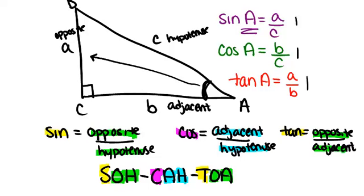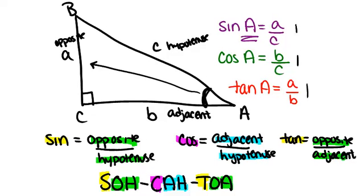So for any right triangle, you can always figure out these three ratios from any of the non-right angles. So we could have done the three ratios, sine, cosine, and tangent, for angle B, as opposed to angle A.